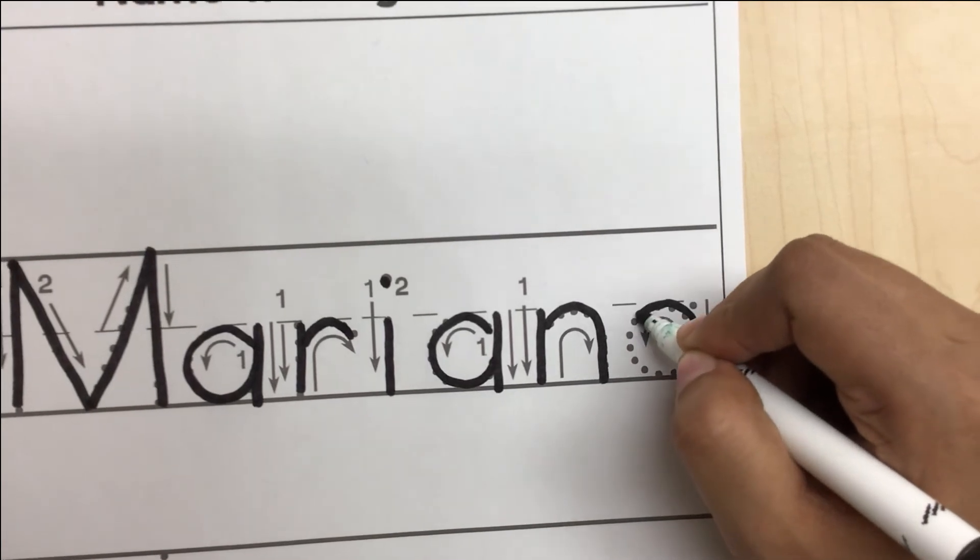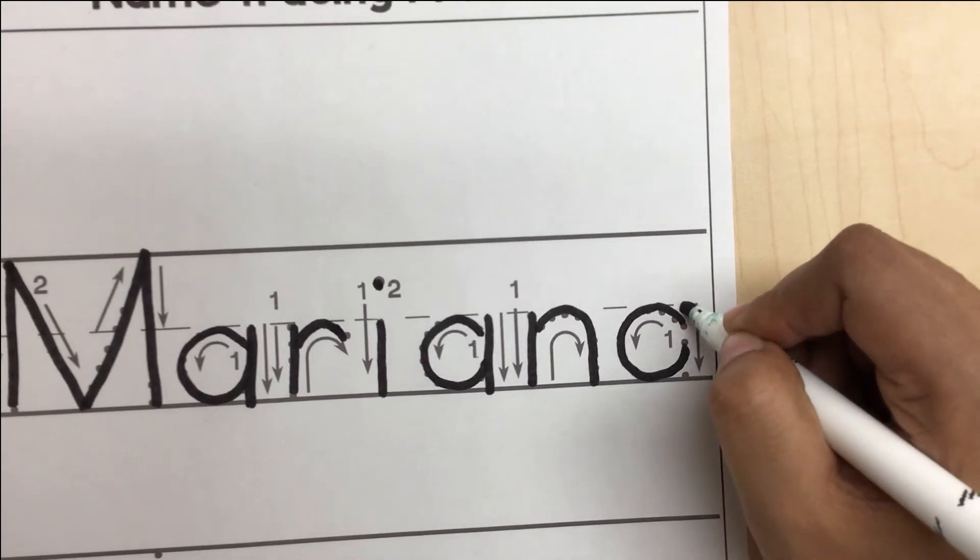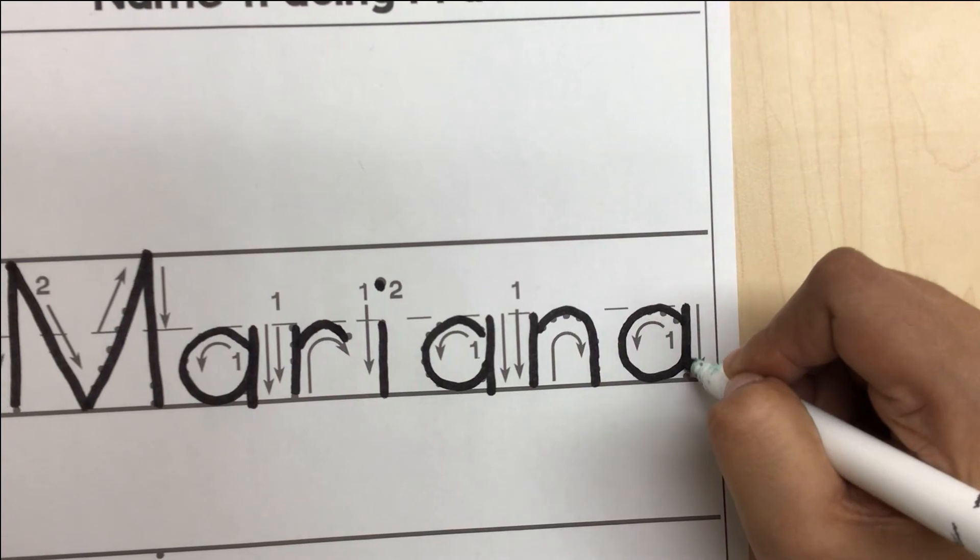Make a letter A. Pick up your pencil, start on the broken line and go down to the baseline.